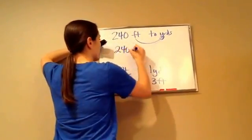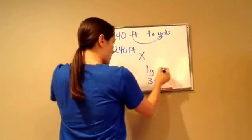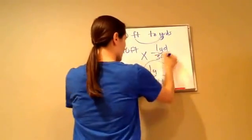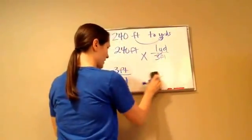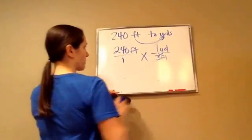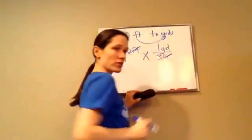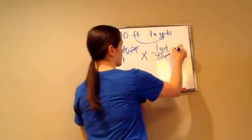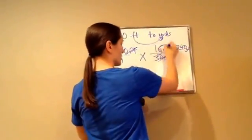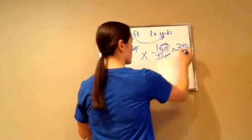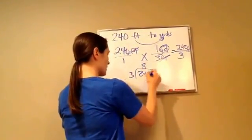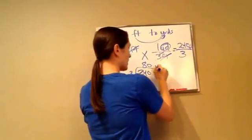So I'm going to write 240 feet times this unit multiplier: 1 yard over 3 feet. Put that over 1. Feet and feet cross out, and then 240 times 1 is 240 — we've got yards still — over 3 times 1 is 3. So 240 divided by 3 is 80 yards. Final answer.